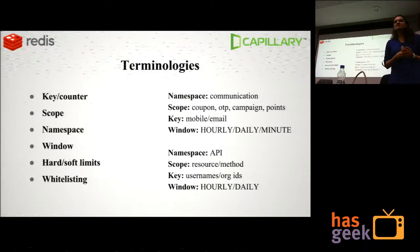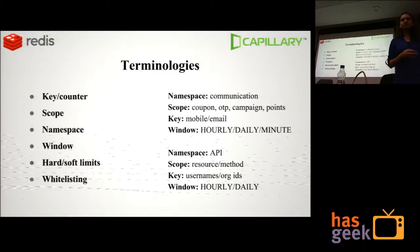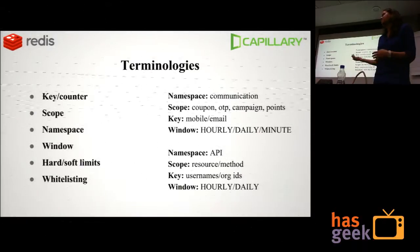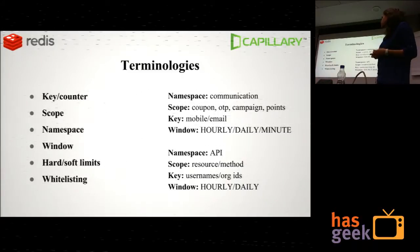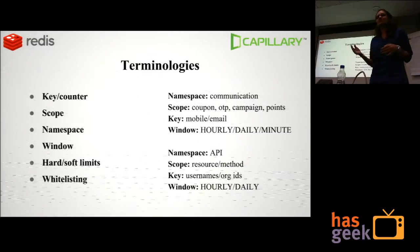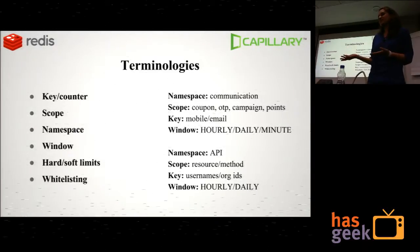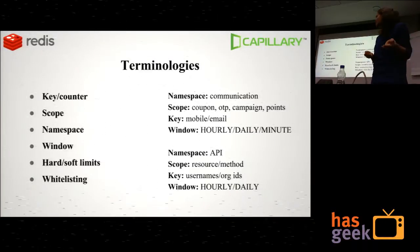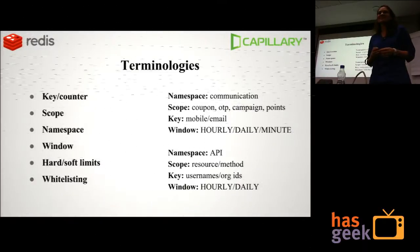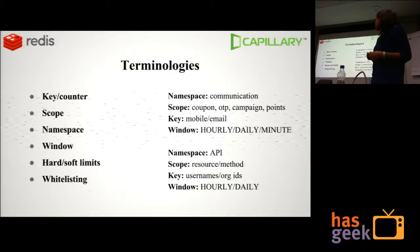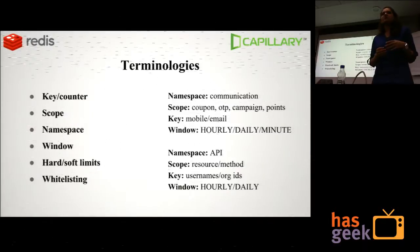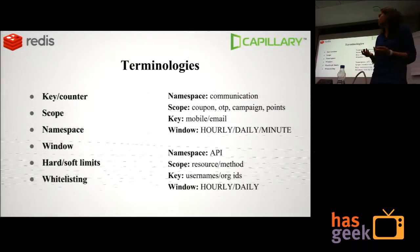Namespace defines the client using the library — for example, communications would be for messaging and API could be another namespace. Window is the time range during which you apply rate limiting; we currently support hourly, daily, and minute windows. Limits are configurable by each service and each organization can have its own configuration. Hard limits exist to avoid someone accidentally setting a really high value.